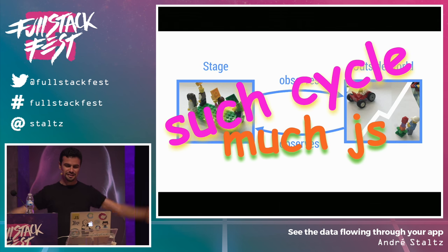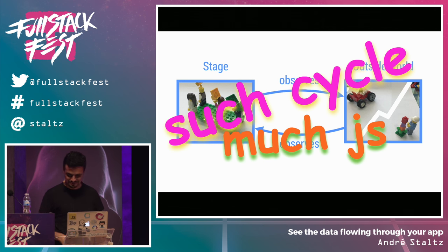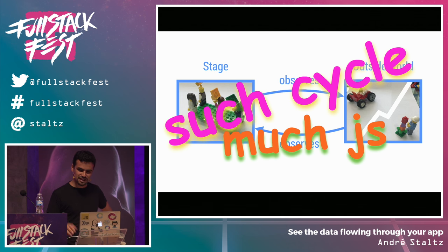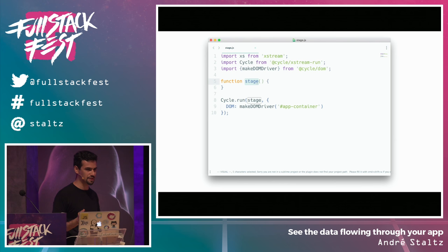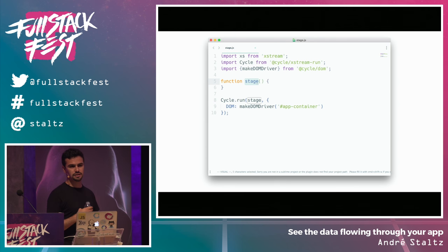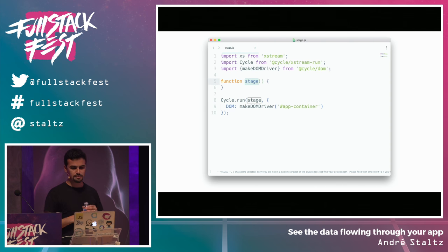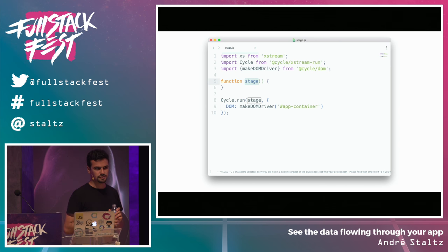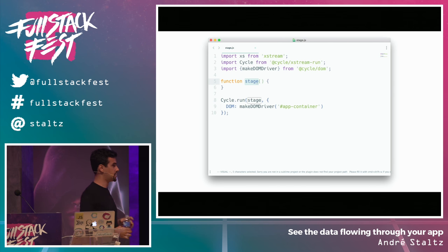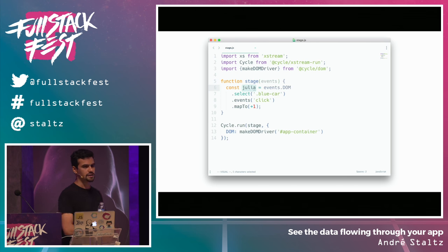The stage is observing the outside and the outside is observing the stage — and that's a cycle. That's where Cycle.js comes from! So how does it look in code? We have an import of xstream, which is a stream library like RxJS. We import Cycle and we import the DOM driver. We make a function called stage, and then we connect the stage with the driver to observe each other. We have the DOM driver because it takes care of the DOM world — elements and stuff — but we can also have a driver for the HTTP world or brain sensors.